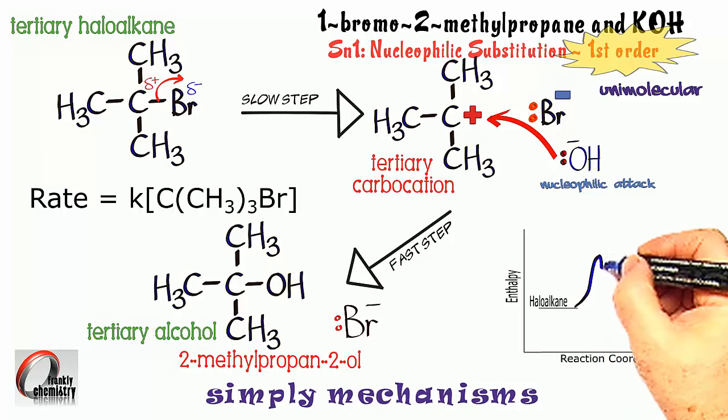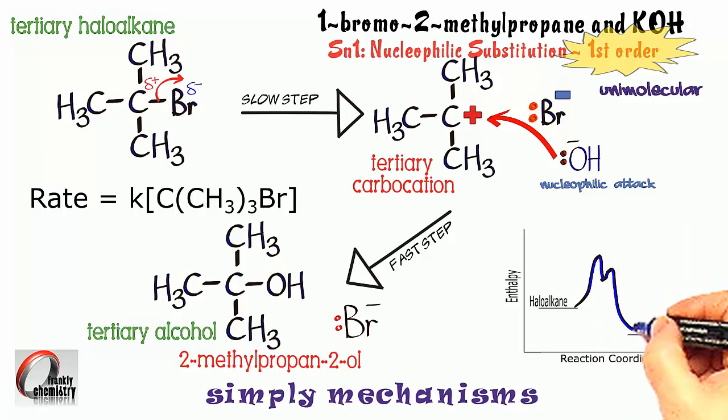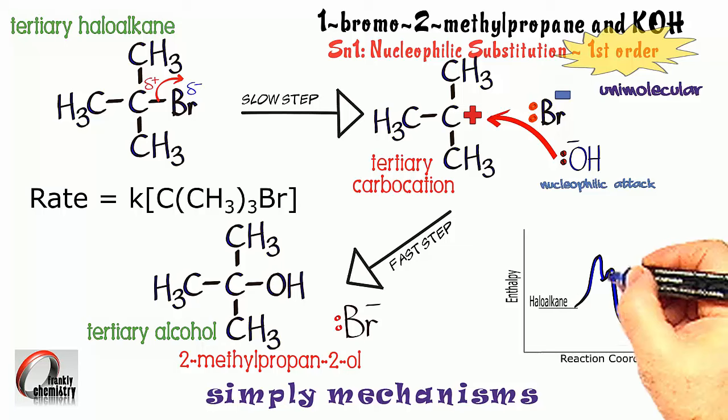Let me use a reaction profile diagram to show you why primary haloalkanes prefer to undergo SN2 than SN1. Here's the profile diagram for what we've just looked at, the SN1 route for a tertiary haloalkane forming an alcohol. That little dip in the middle of the profile diagram represents the intermediate that forms, the tertiary carbocation. What's making that unstable is the positive charge on the carbon that's missing an electron.